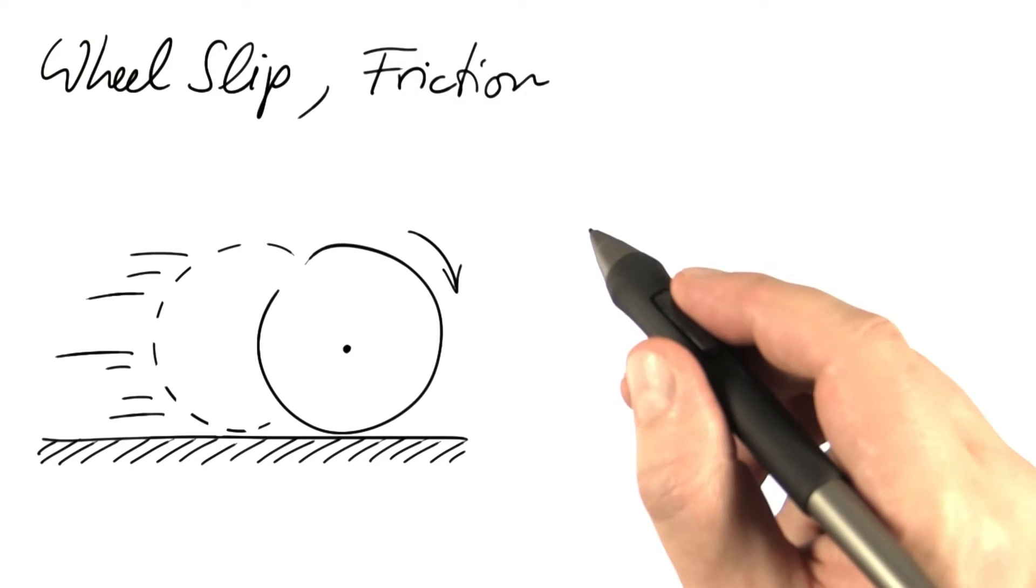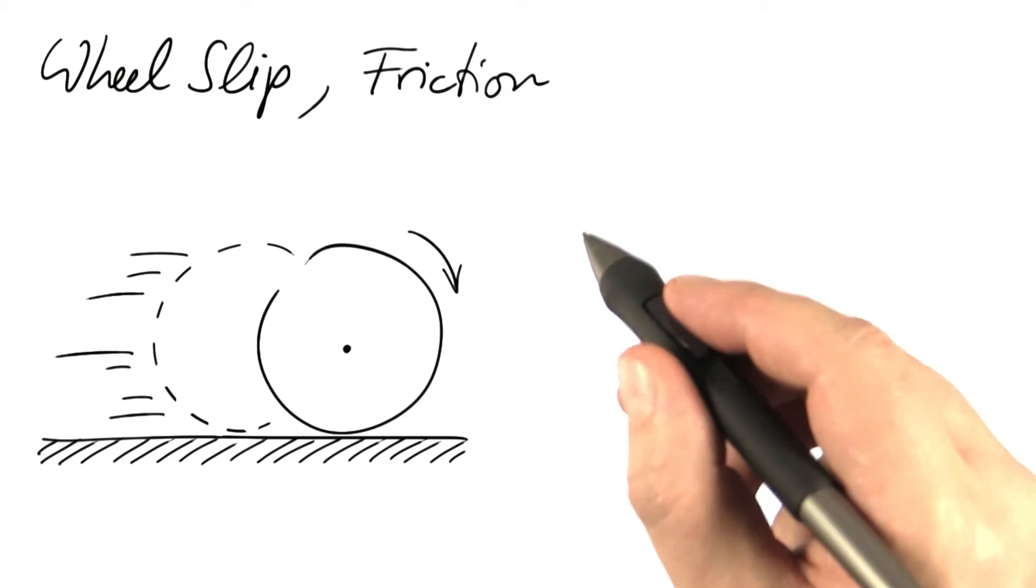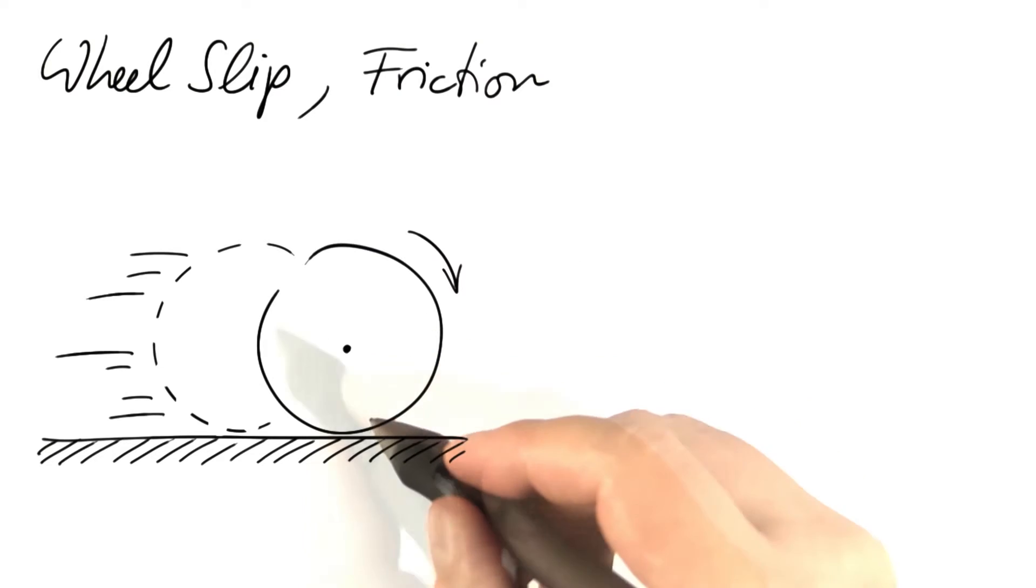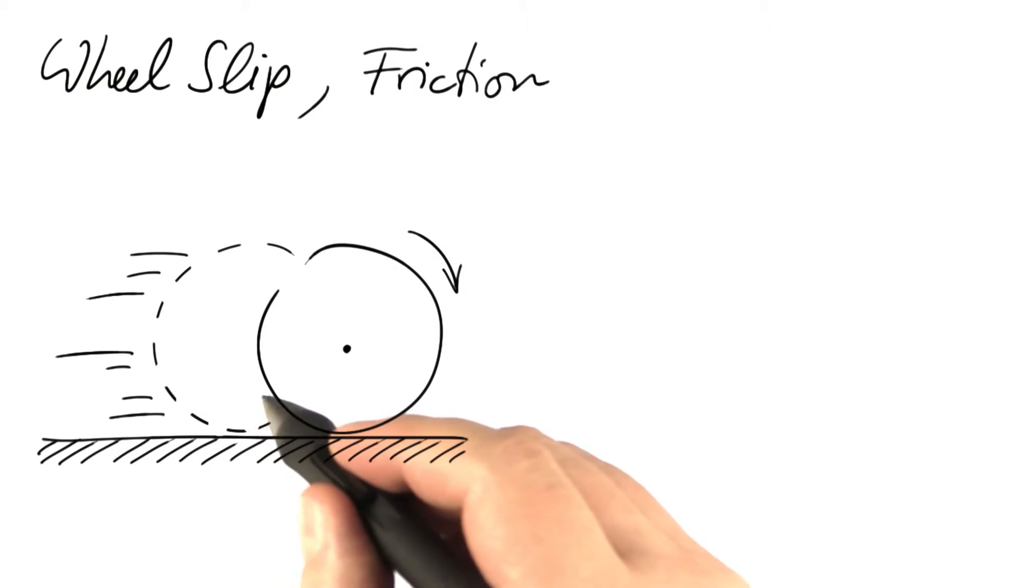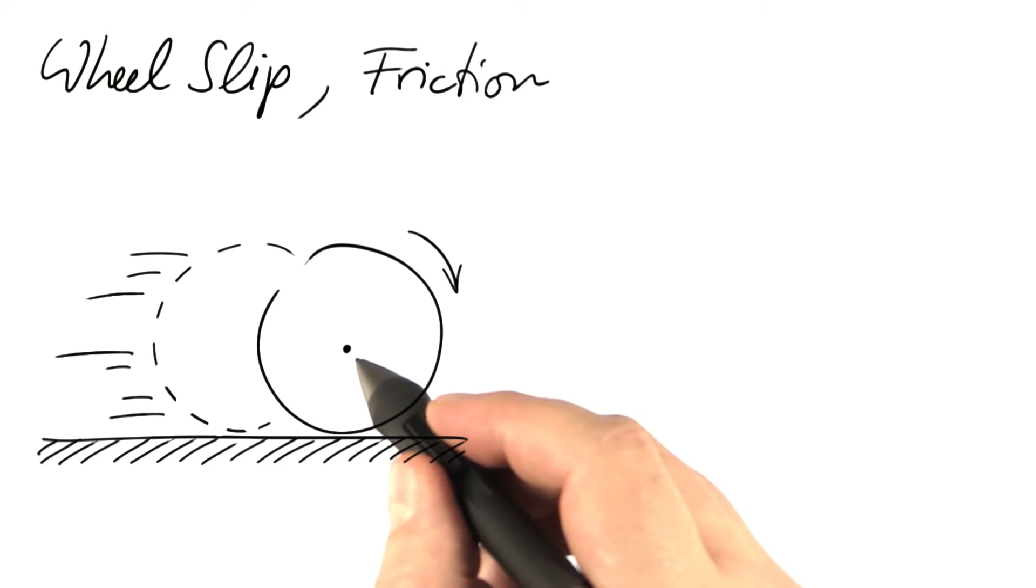Now let's look at how the distinction between static friction and kinetic friction applies to the rolling wheel. Assume that the wheel first occupies this position and then rolls on toward this position, a fraction of a second later.